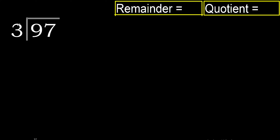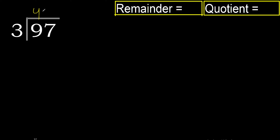97 divided by 3. 9 is not less than 3, therefore we work with 9. 3 multiplied by 4 is 12, but 12 is greater than 9, therefore not. 3 multiplied by 3 is 9, 9 is not greater than 9, therefore ok.